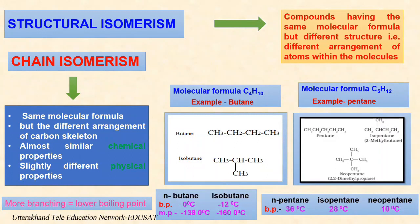Generally, branching isomers have lower boiling and melting points than linear chain isomers. The boiling and melting points of isobutane are minus 12°C and minus 160°C respectively, compared with 0°C and minus 138°C for n-butane. The boiling point of n-pentane is 36°C, for isopentane is 28°C, and for neopentane is 10°C. This is because linear chain isomers have more surface area of contact and hence stronger intermolecular forces of attraction compared to branching isomers which have a compact state.